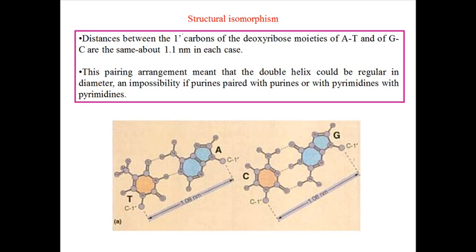Now let's talk about structural isomorphism. What is structural isomorphism? The basic concept is the distance between the first carbon of the deoxyribose moieties in A-T and G-C are about 1.1 nanometer in all these cases. You can see here, so this is the isomorphism.